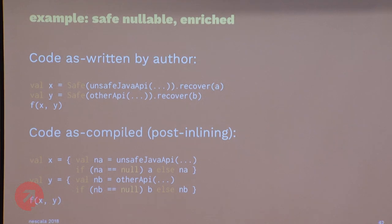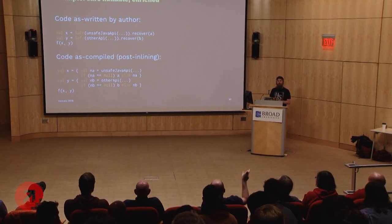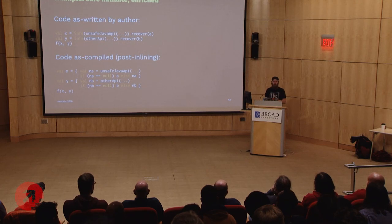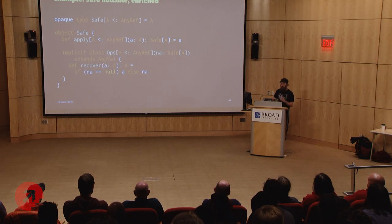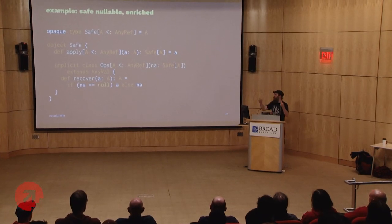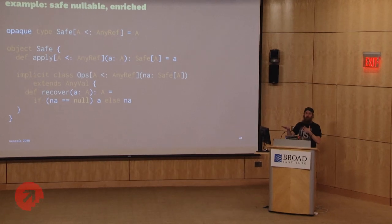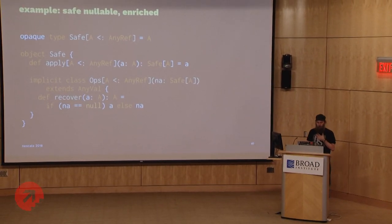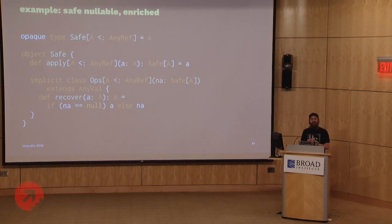Q&A: If you have a binding of type Safe[Something], you can't assign null to it because it doesn't conform to the null type — correct. If you want to be able to talk about the empty Safe value, you define it in the companion — a val empty or def empty that produces null values. If you fail to do that, no one else can do it either. There's no way from outside the companion to introduce a null value, which is kind of cool.